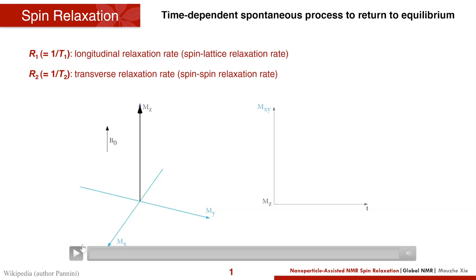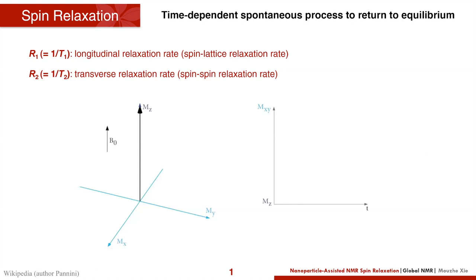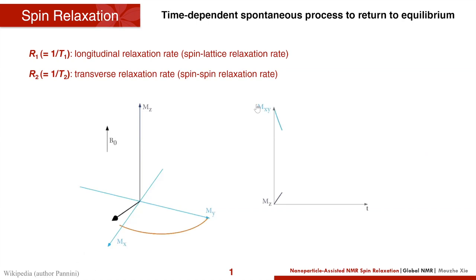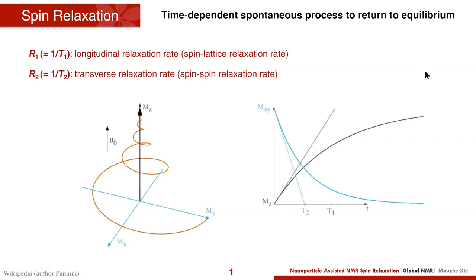Just a quick refresher for everyone. There are generally two types of spin relaxation. T1 relaxation, also known as longitudinal relaxation or spin-lattice relaxation, looks at the Z-components — basically the building up of magnetization along the Z-axis when it returns to equilibrium. T2, or transverse relaxation or spin-spin relaxation, looks at the decay of magnetization in the transverse (X-Y) plane.